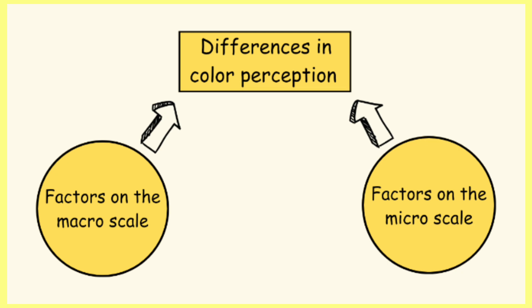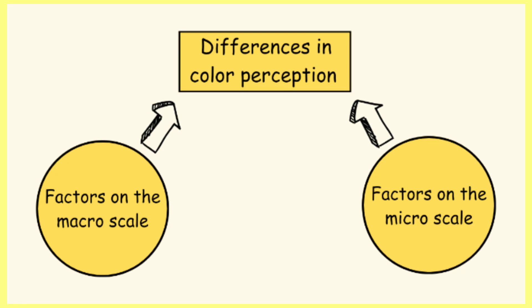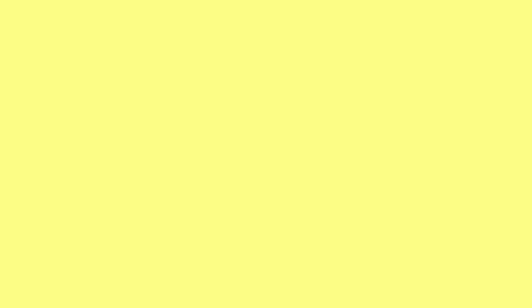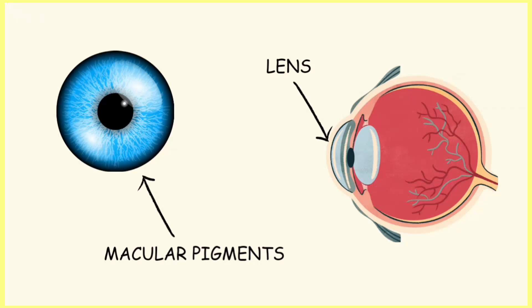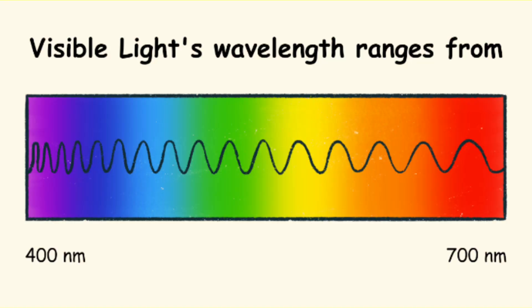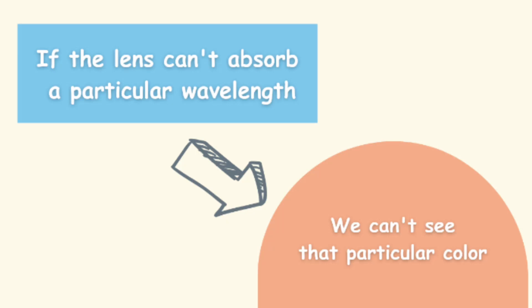Research says that this difference in color perception is caused by several factors on both the macro and micro scales. In fact, variability in color vision arises at all levels of the process of seeing, and these differences start even before light reaches the receptors. The macular pigments in our eyes and the density of the lenses in our eyes both impact the range of wavelength of light that we can absorb. Each wavelength of light that falls within the range of 400 to 700 nanometers has its own color that we can see. Which means if we have trouble absorbing a particular wavelength, we will have trouble seeing its color too, so we may perceive it differently — and sometimes very differently.